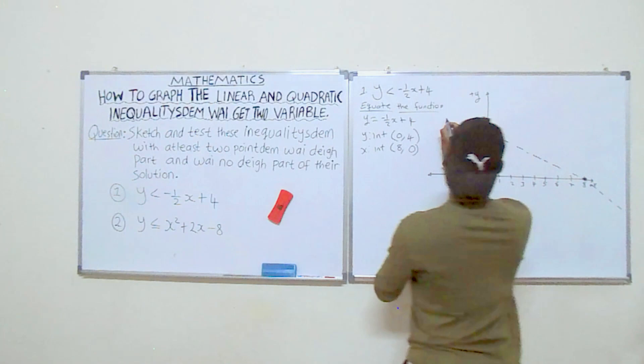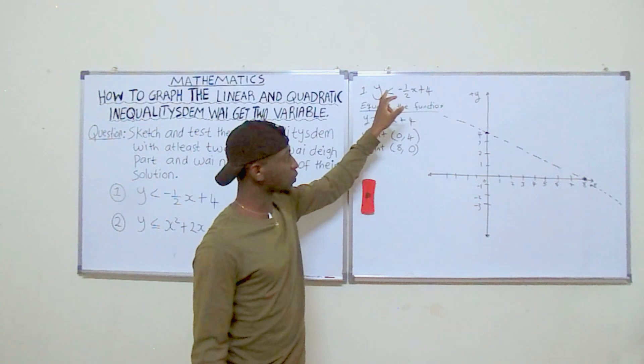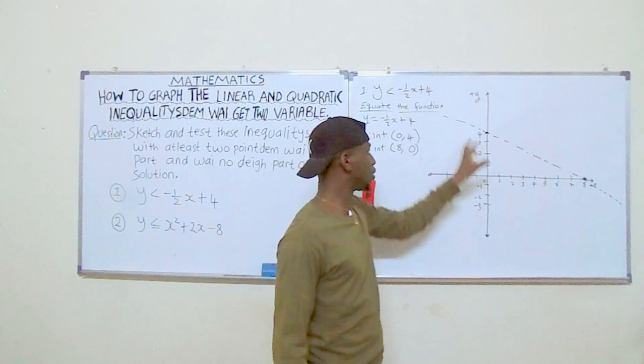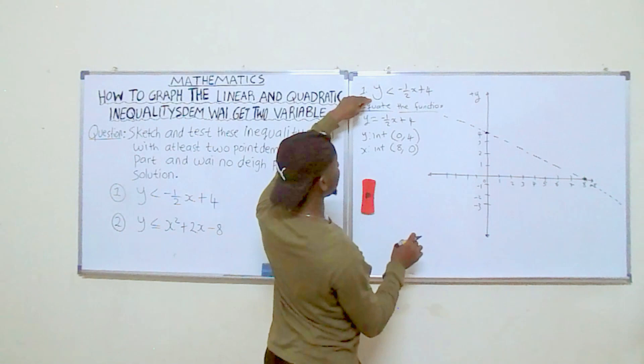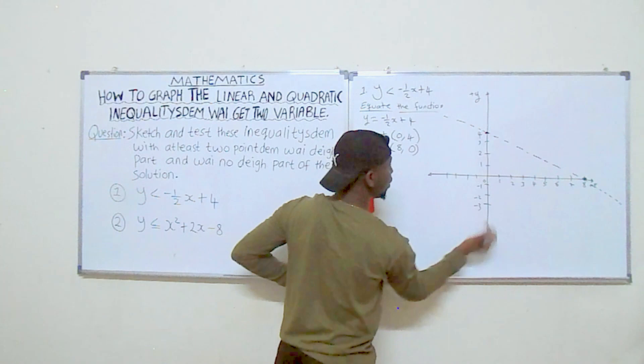This dashed line represents our straight line and tells us the boundary of the solution of this inequality. Any point not on this dashed line may or may not be in the solution. Now to shade the region: anytime we get a less-than sign, y gets values below this function. So we shade everything under this line because of the less-than sign.